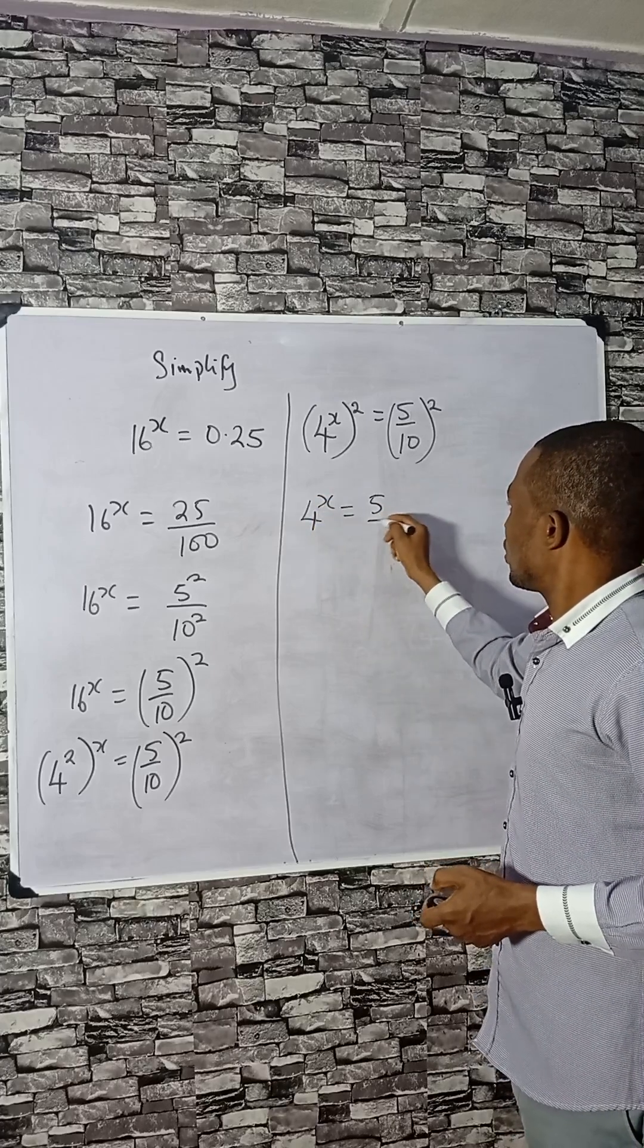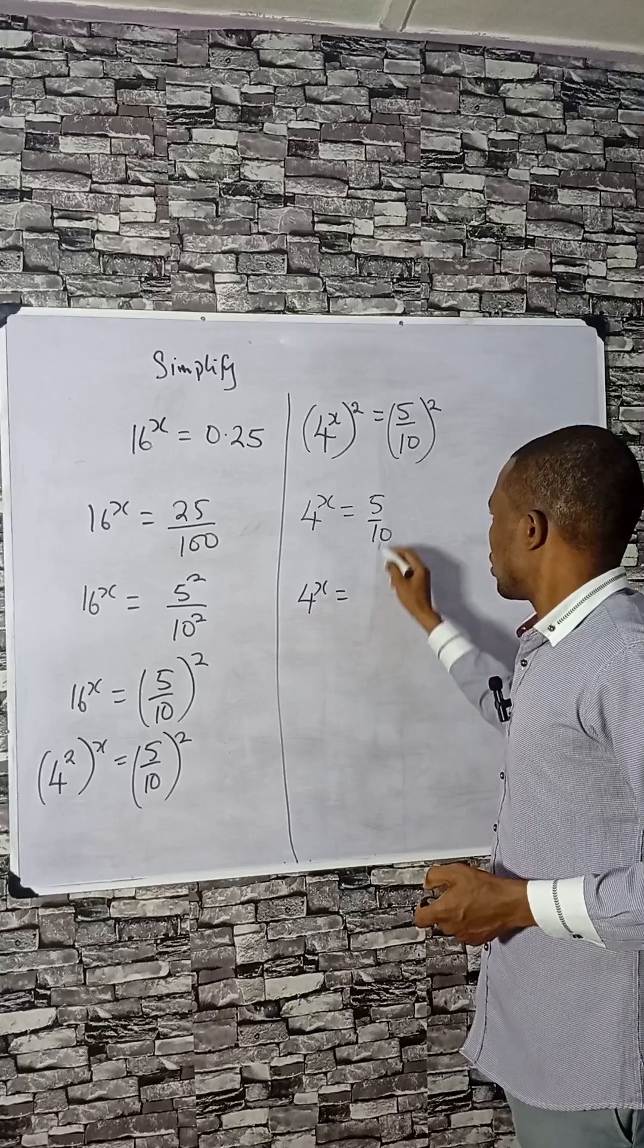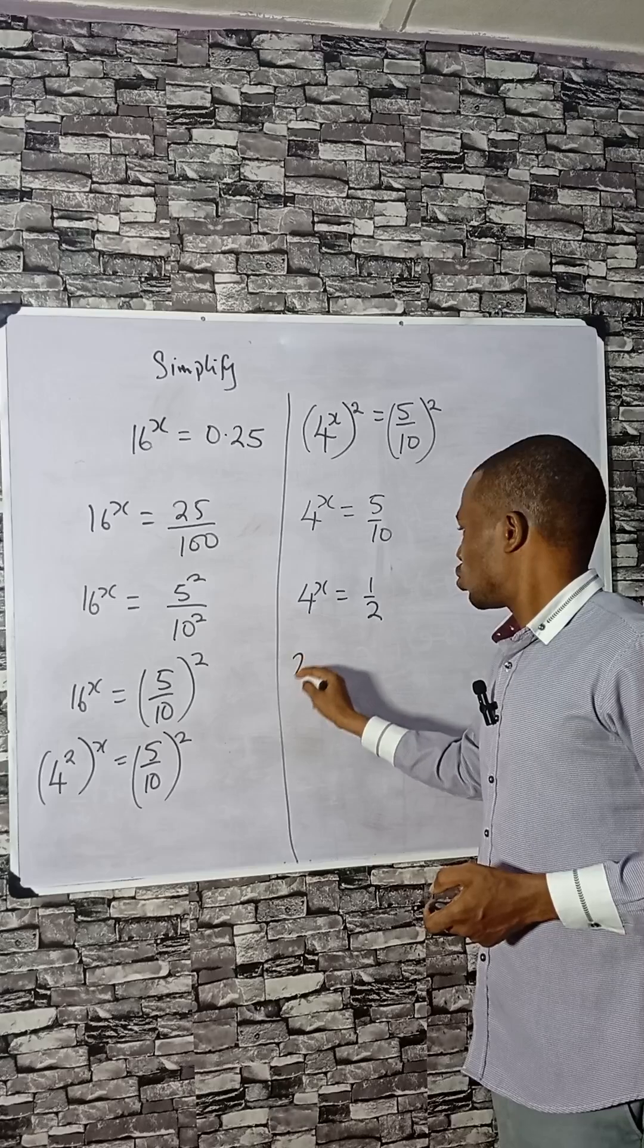So that would be 4 to the power x equals 5 over 10, which is a half. You can convert this: 4 equals 2 squared.